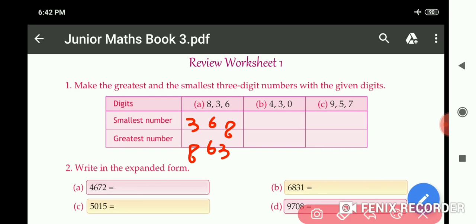Now come to part B. Smallest number - we cannot start the number with 0, so 3, 0, 4 and the greatest number 4, 3, 0. Now C part: smallest number 5, 7, 9 and greatest number 9, 7, 5. Like this we do question number 1.